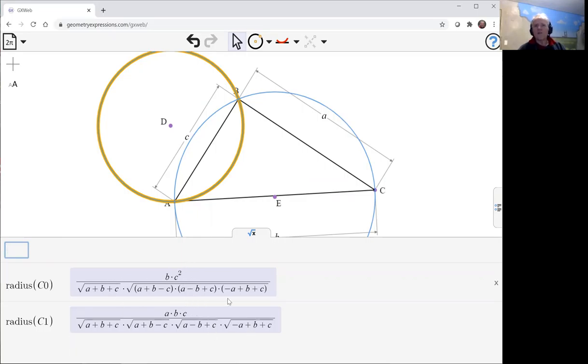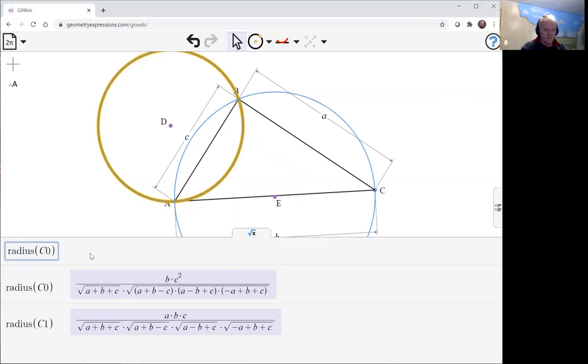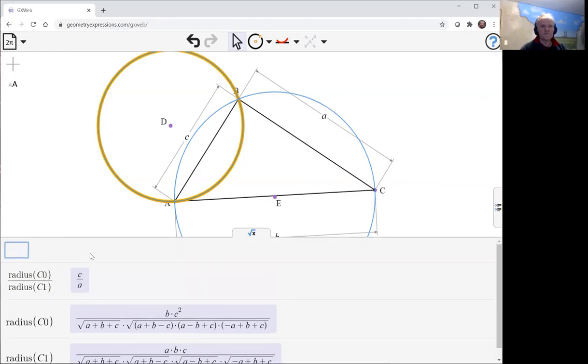We can in our head probably work out what the ratio is or we can ask GXweb to do it for us. The radius of the mixed linear circle divided by the radius of the circumcircle. And we see that is C over A.